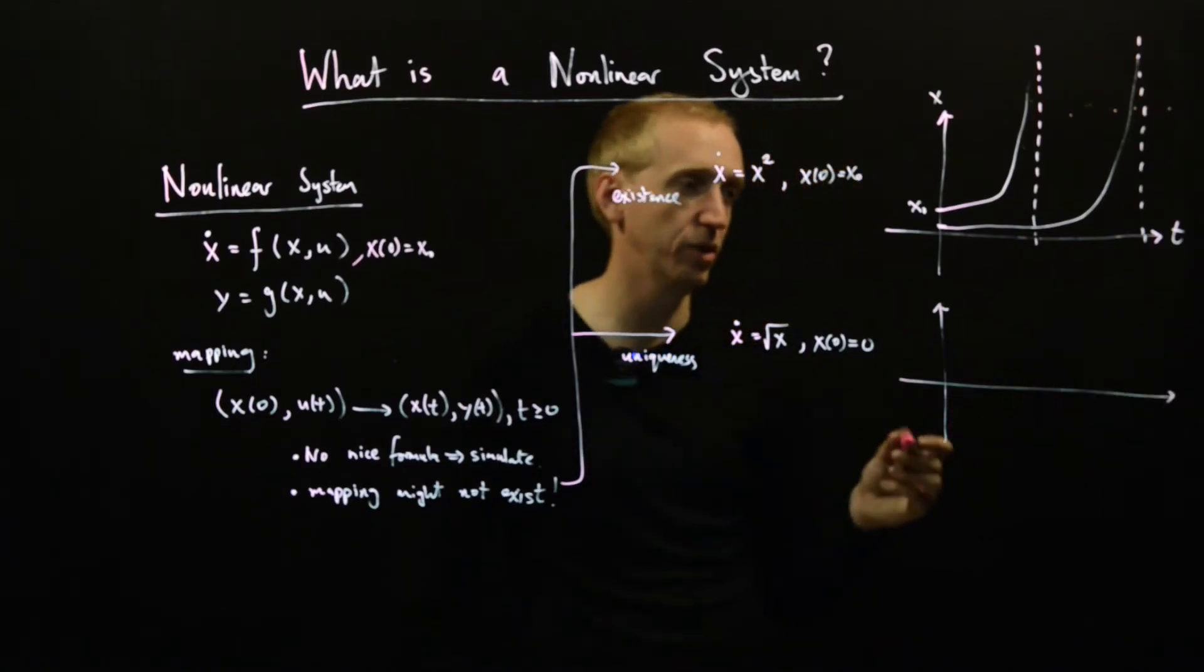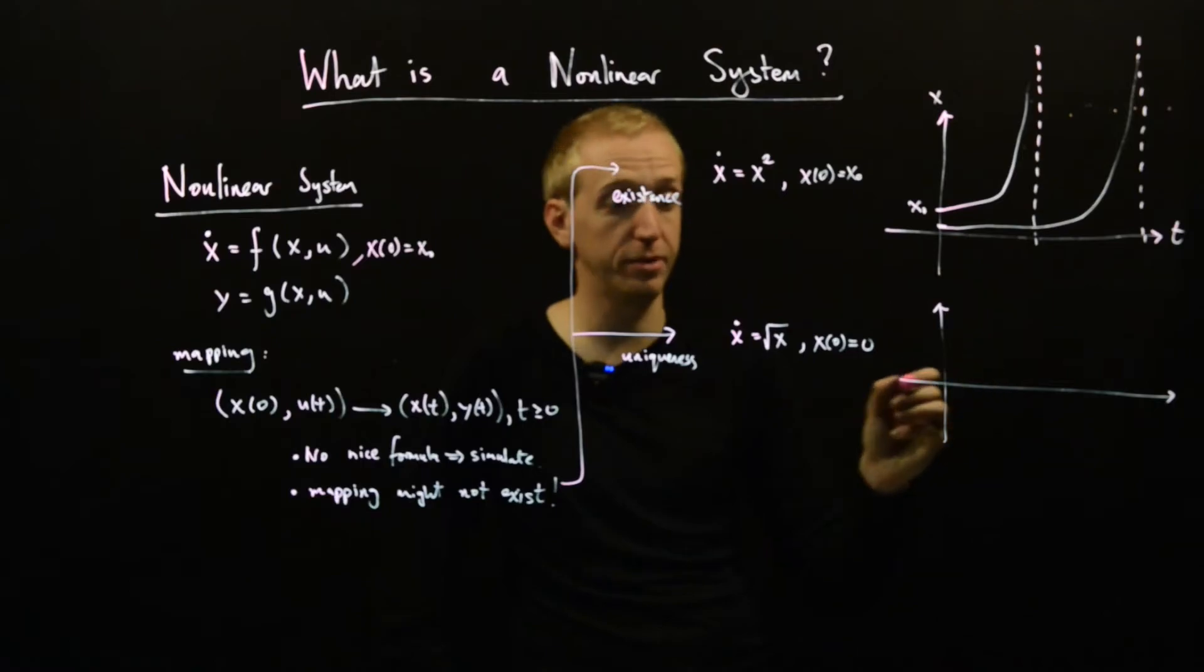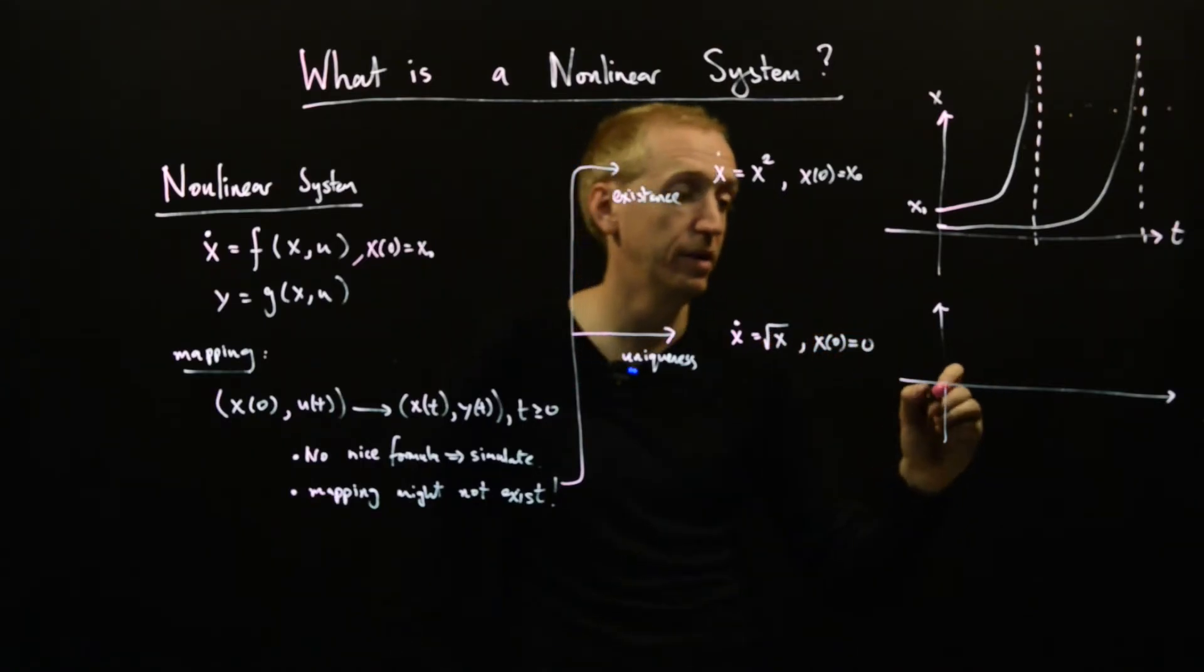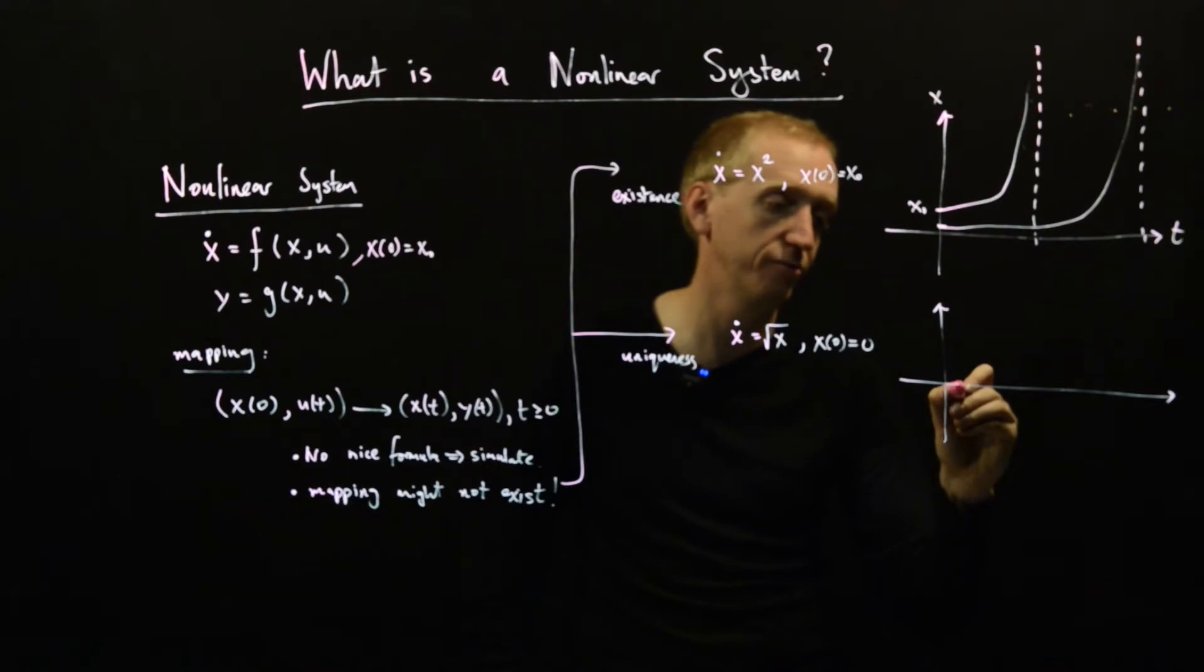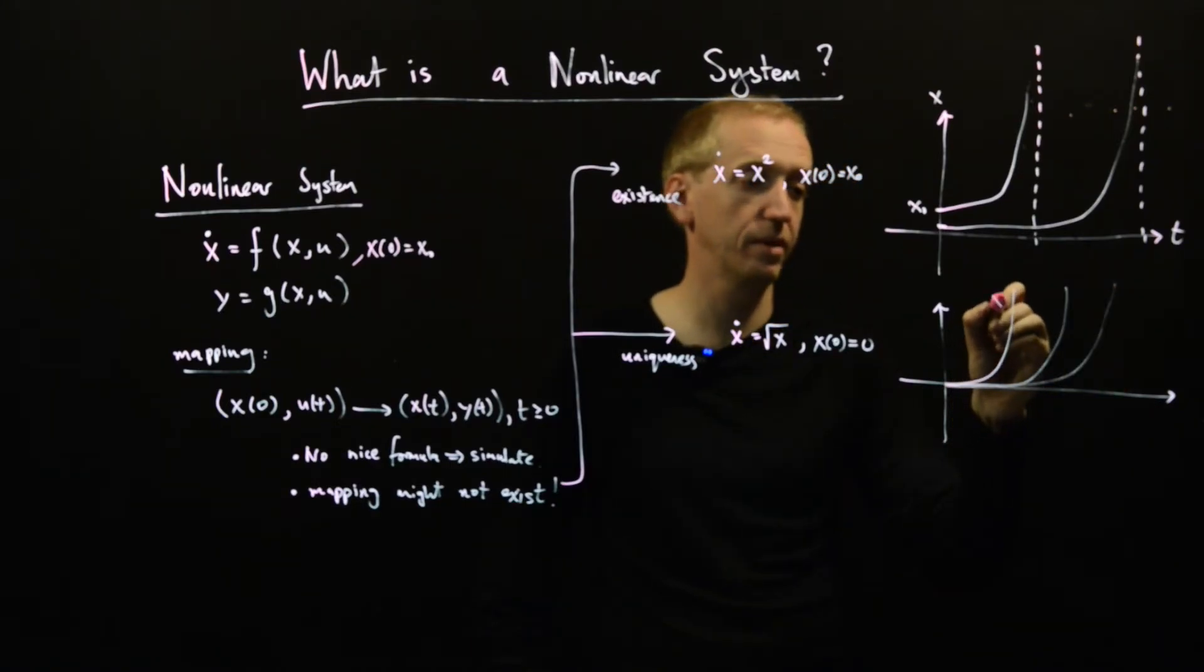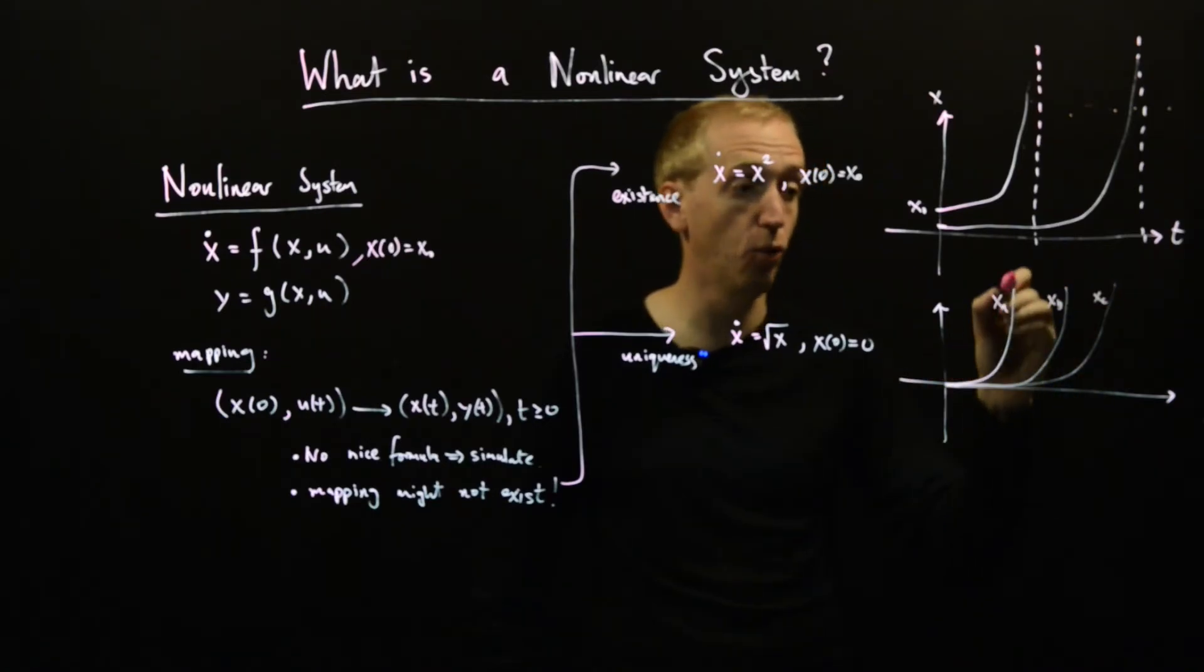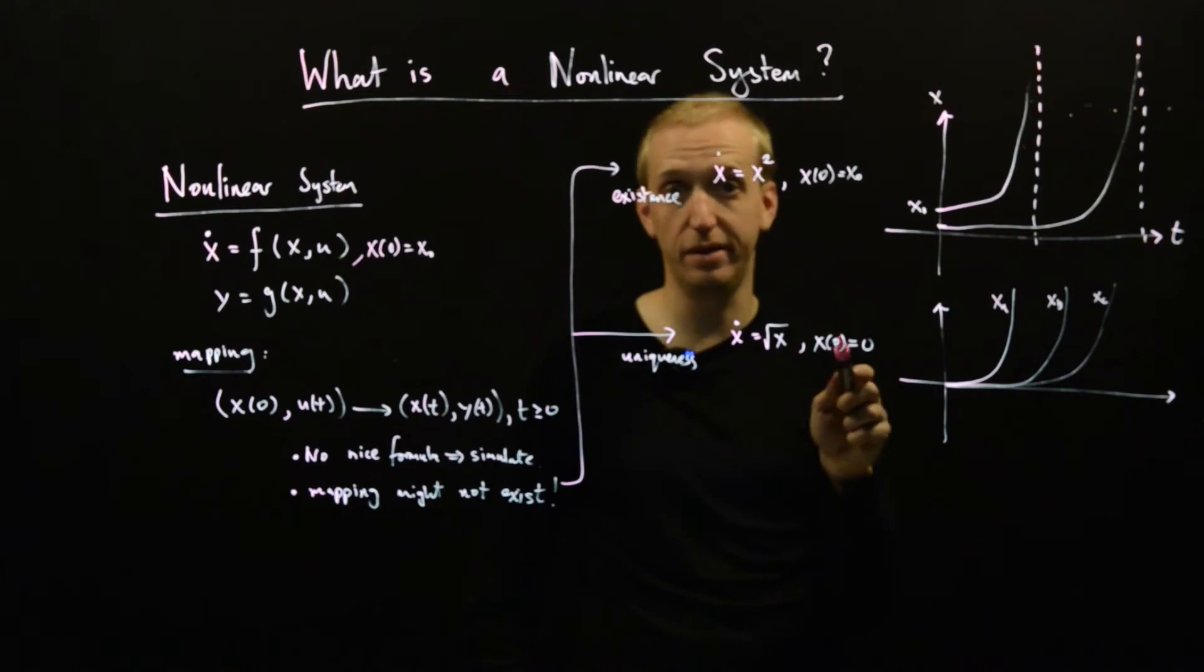And if we simulate this, or actually we can't simulate in this case - well, we can but who knows what we'll get. There's actually multiple solutions. So again, no input, same initial condition, there's a whole bunch of valid solutions and they all look like this. So it turns out that x_a, x_b, x_c - these are all valid solutions to this differential equation.